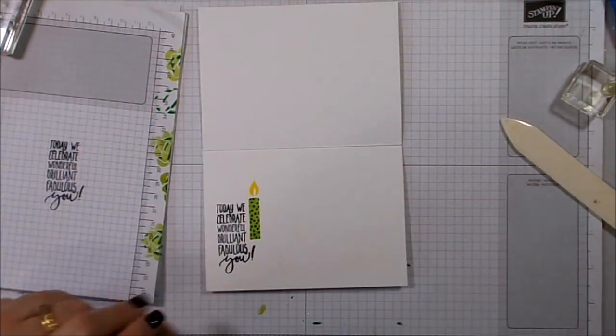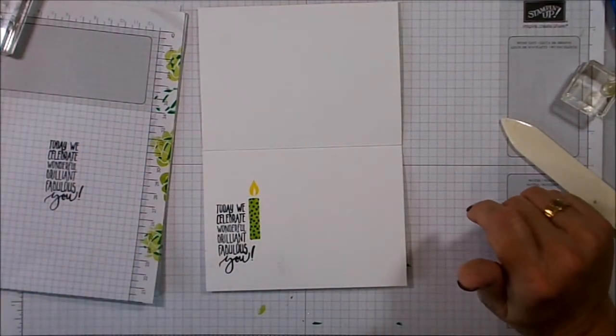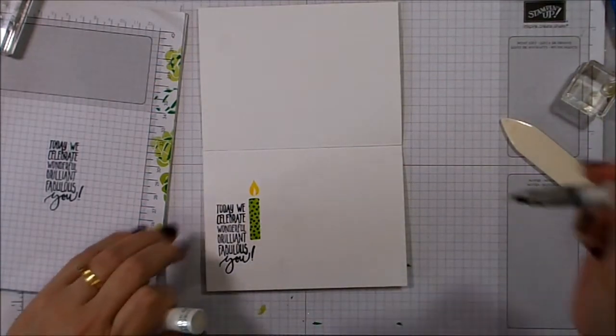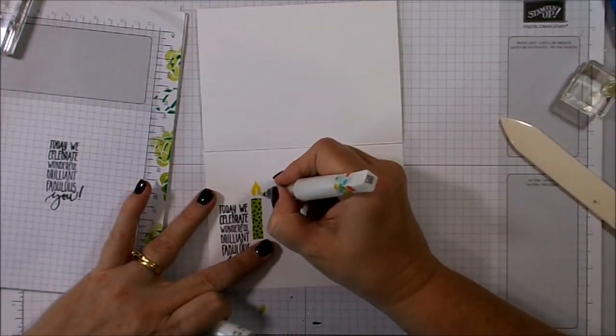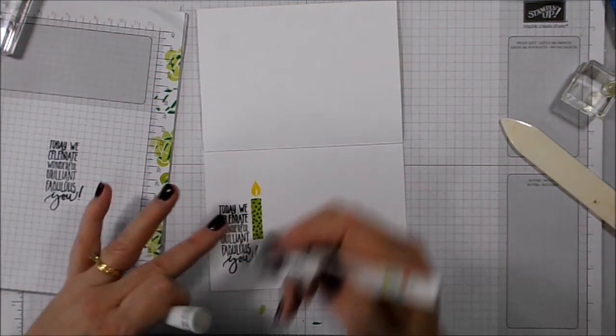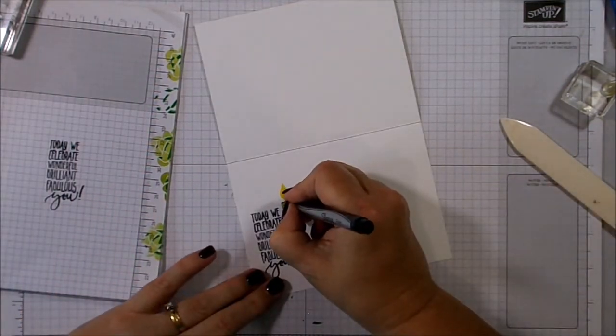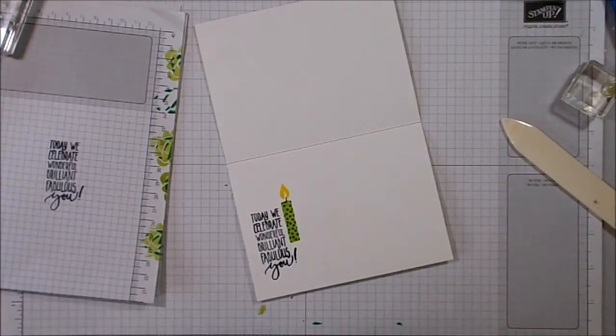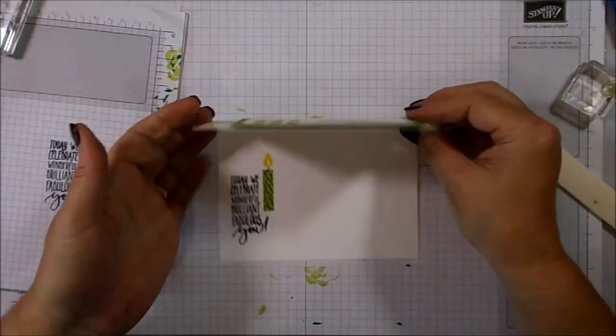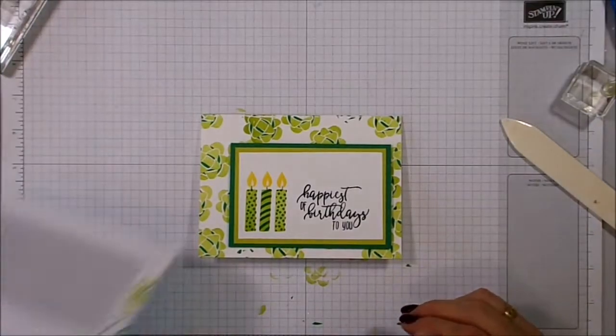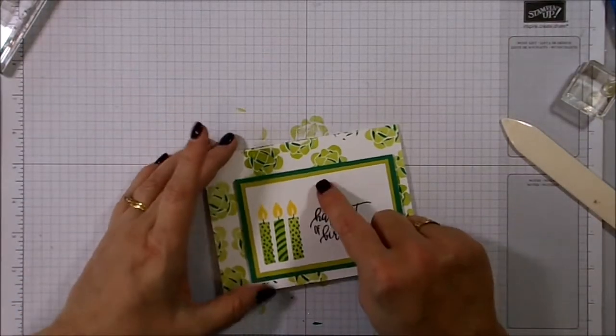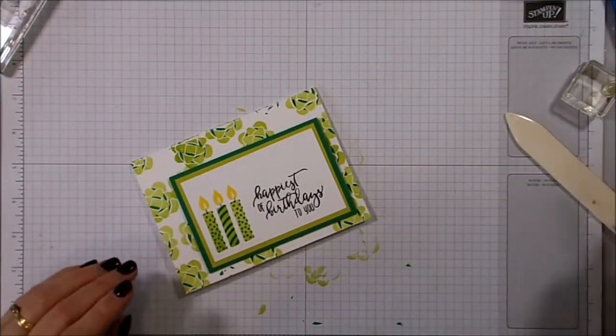I think these smudges, I must have some dirt on my paper trimmer. And it's smudged off on there. Okay. In with our Wink of Stella one more time. Just to give that a bit of a gleam. And then just with my black texture for the wick. And that's the inside of the card finished. And the outside finished.